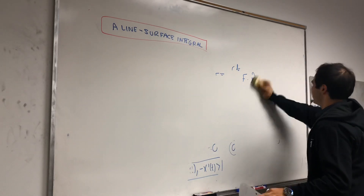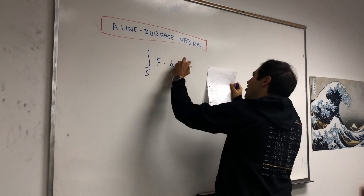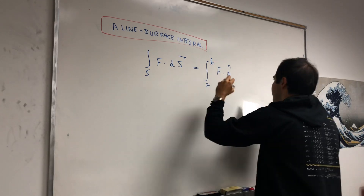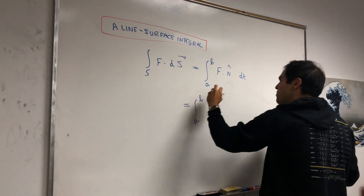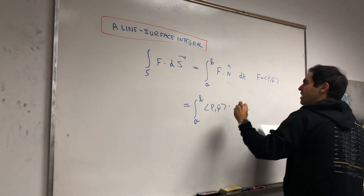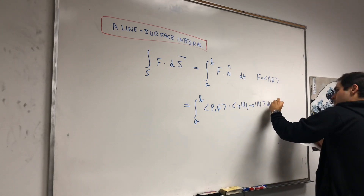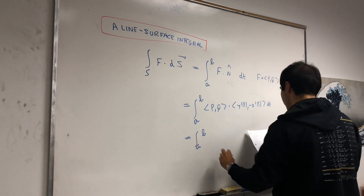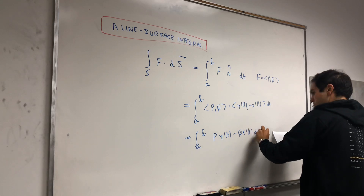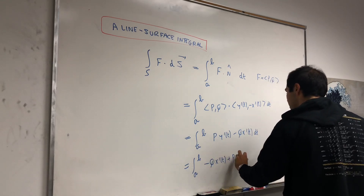Good. We have the normal vector, and all we have to do to define the line surface integral is plug in this normal vector. So what is the 1D surface integral? It becomes the integral from a to b of F·n̂ dt. We're in two dimensions, so F has components P and Q. This becomes (P, Q) dotted with (y'(t), -x'(t)) dt, which gives the integral from a to b of P·y'(t) - Q·x'(t) dt.